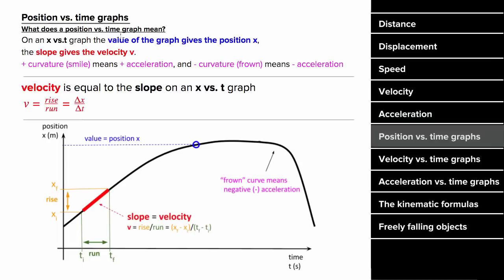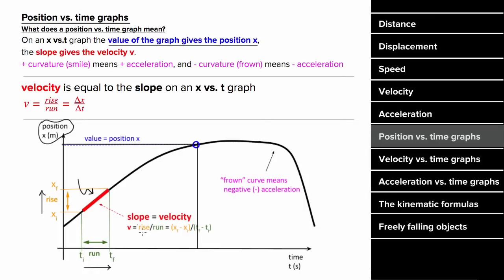How do you interpret a position versus time graph? The value of the graph gives you the position X — at some time T, the vertical axis value gives you the position at that time. The slope equals the velocity of the object, found using rise over run: the change in X over the change in time. Since rise over run here is displacement per time, the slope equals velocity. You can also identify acceleration from curvature: a smiley-face curve represents positive acceleration, and a frowny-face curve represents negative acceleration.